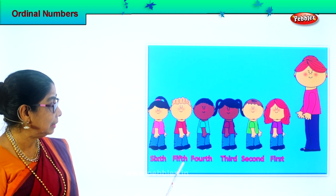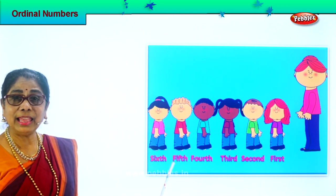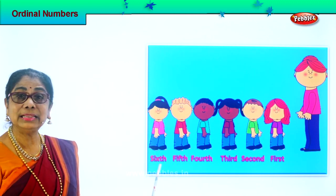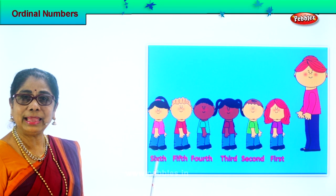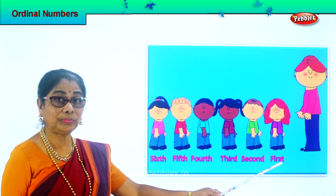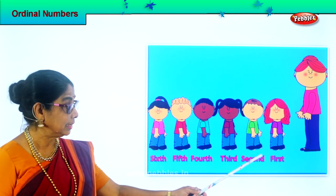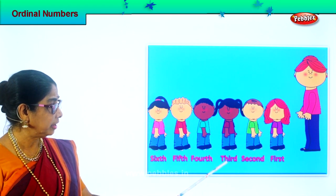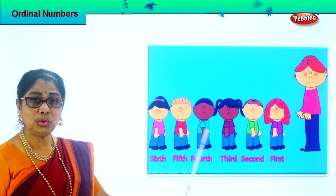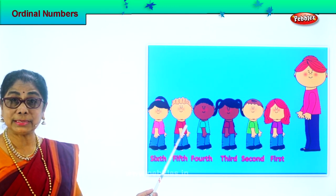And then another little girl says, I'm the fifth: F-I-F-T-H. Fifth. And finally you have the last girl — sixth: S-I-X-T-H. Look at the spellings. You must learn to say and write the spelling correctly. First, second, third, fourth, fifth, sixth. All the children are standing in the ordinal number system.